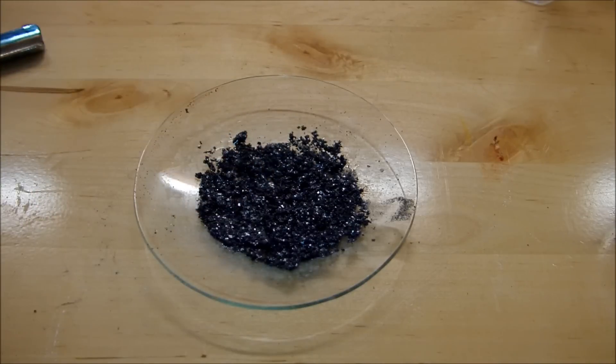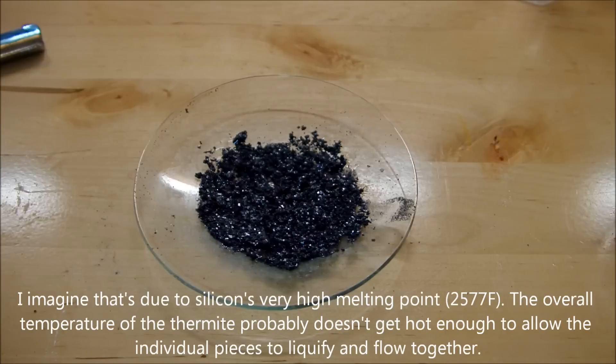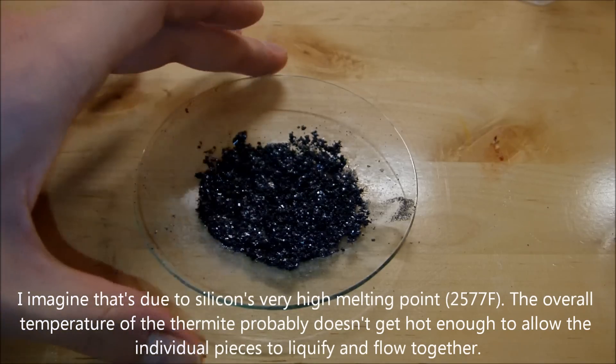So apparently what happens with silicon thermite is it makes not one large lump as most of the other thermites do, but it makes a lot of smaller pieces that sort of agglomerate together and apparently will break apart if you soak them in acid for too long.